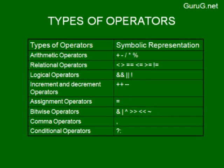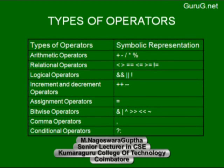Relational operators are used to compare values: greater than, less than, equal to, greater than or equal to, less than or equal to, and not equal to. Logical operators perform AND, OR, and NOT operations. The increment and decrement operators use '++' and '--'. For example, instead of writing 'a = a + 1', you can write 'a++' in C. Similarly, for decrement you can use '--'.